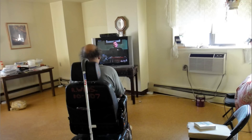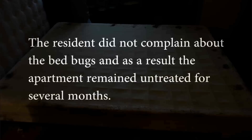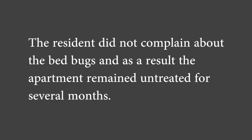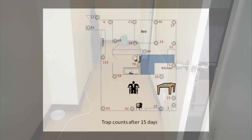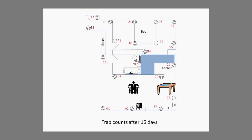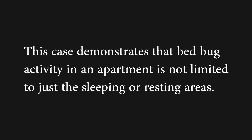This shows a heavily infested one-bedroom apartment occupied by a senior citizen. His apartment was reasonably clean with little furniture, and he spent most of the daytime in his wheelchair. Hundreds of bed bugs were found on the bed. The extent of black stains on the box spring indicates the level of infestation was high. The resident did not complain about the bed bugs, and as a result, the apartment remained untreated for several months. Insect interceptors were placed under the bed legs and along walls in every room to monitor the bed bug numbers and distribution. Bed bugs were found in every one of the monitors after 15 days, with the largest number found in the monitor in the hallway across from the bathroom. This case demonstrates that bed bug activity in an apartment is not limited just to the sleeping or resting areas. This apartment required multiple treatments in all rooms to eliminate the problem.